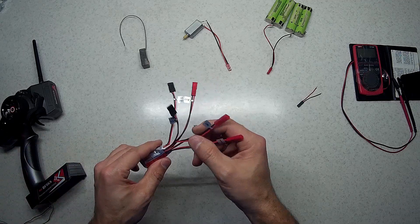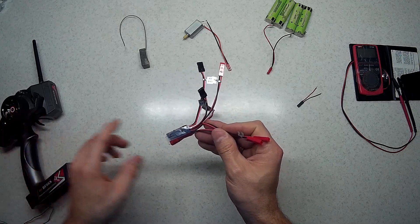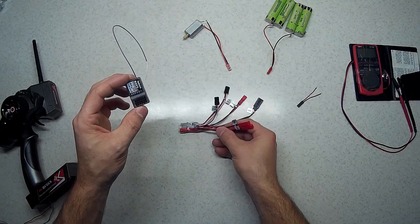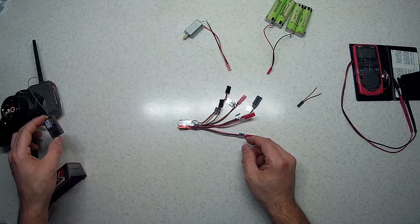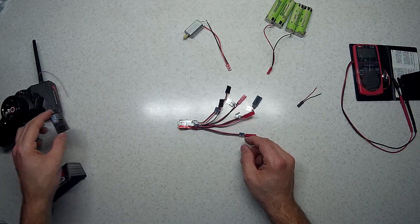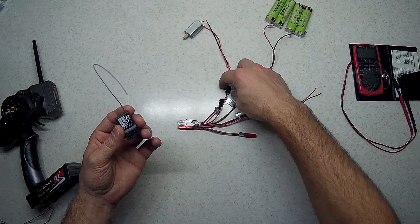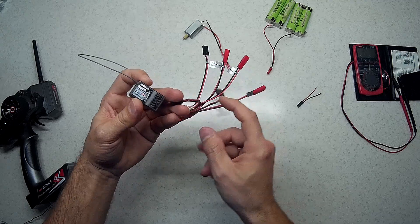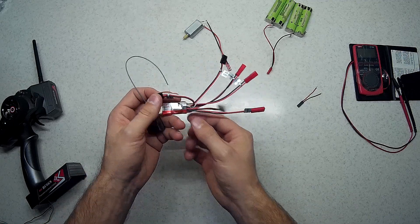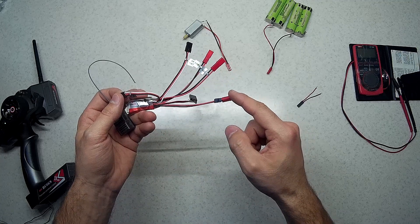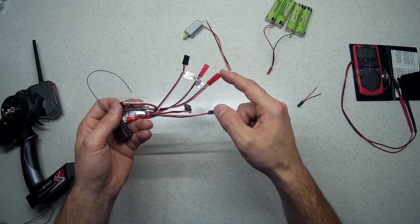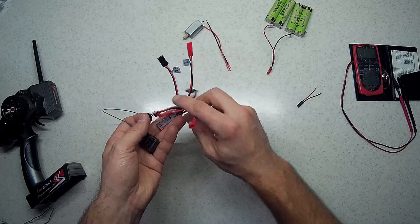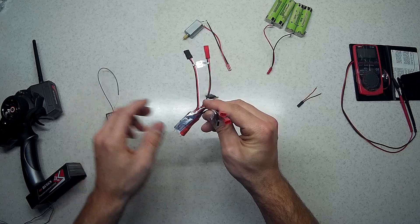And in order to make the link from the remote controller to the power and the motor you need this receiver which comes in together with the remote controller. And the receiver is connected right here. So through this connection the ESC knows whether the motor should run forward or in reverse.